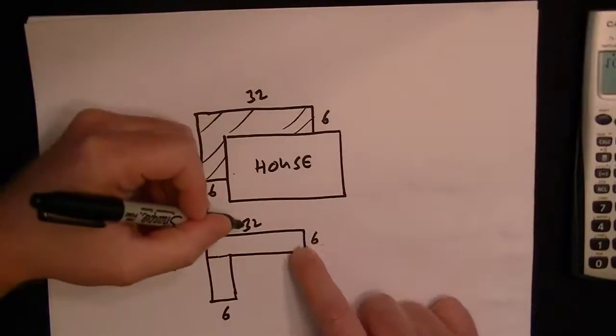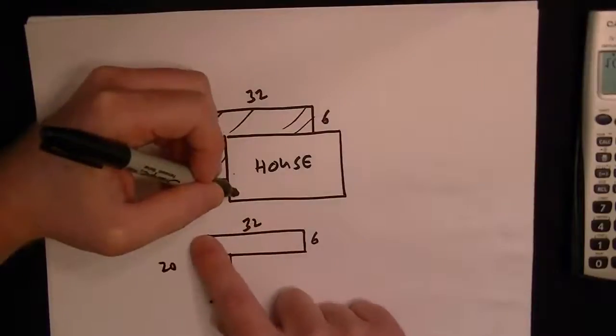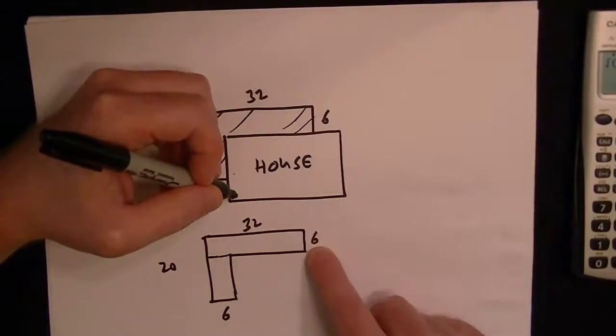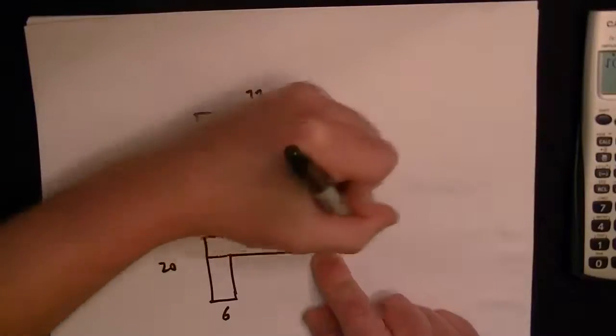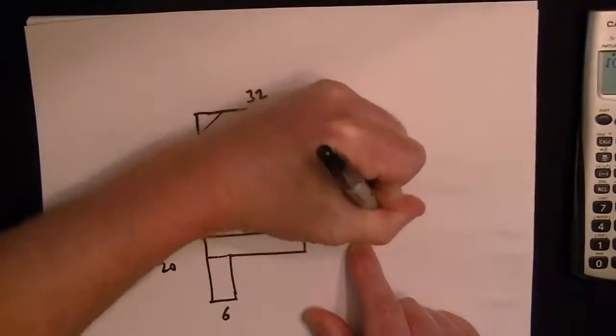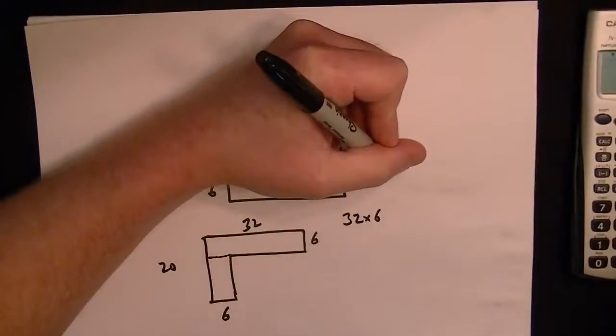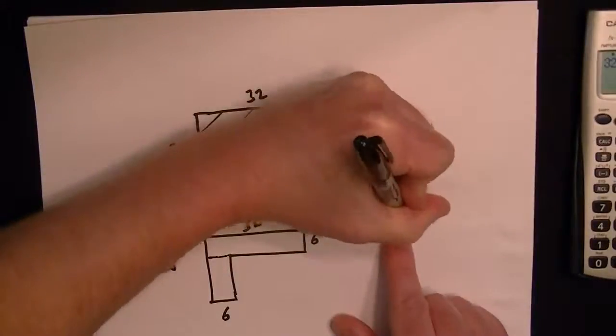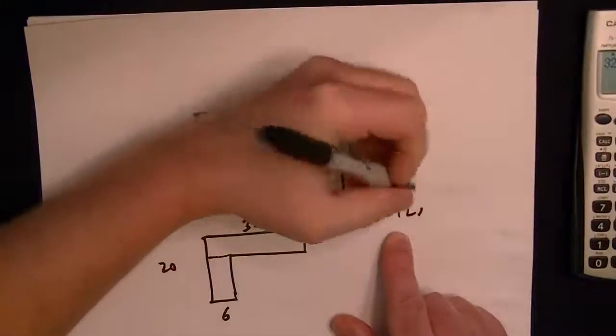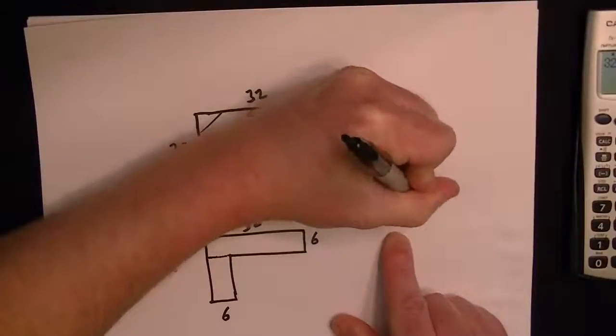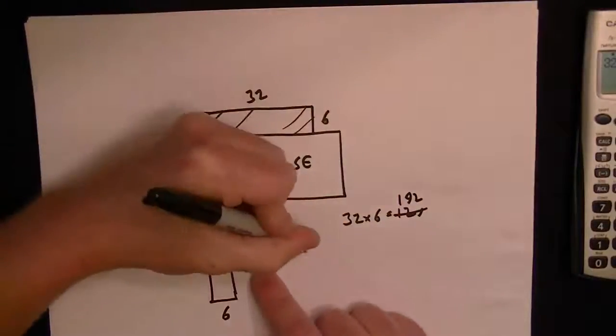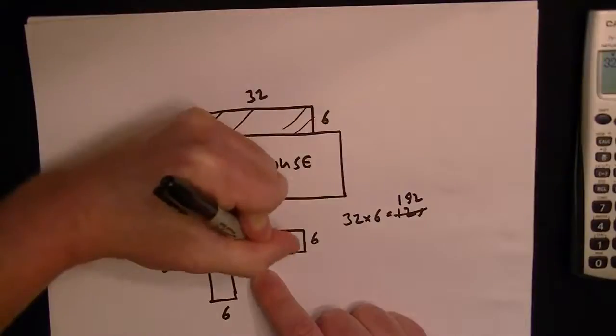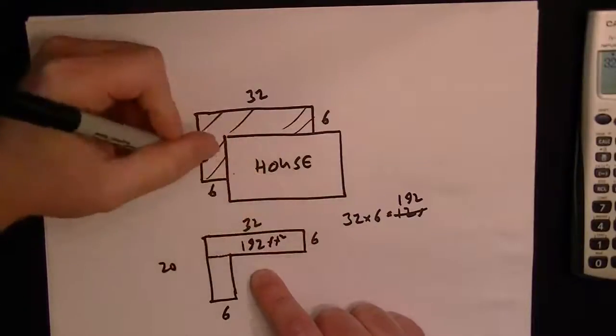So now to get the area you can multiply the length of this rectangle by the width of this rectangle. So 32 by 6, and that is 192. So this one is 192 foot squared.